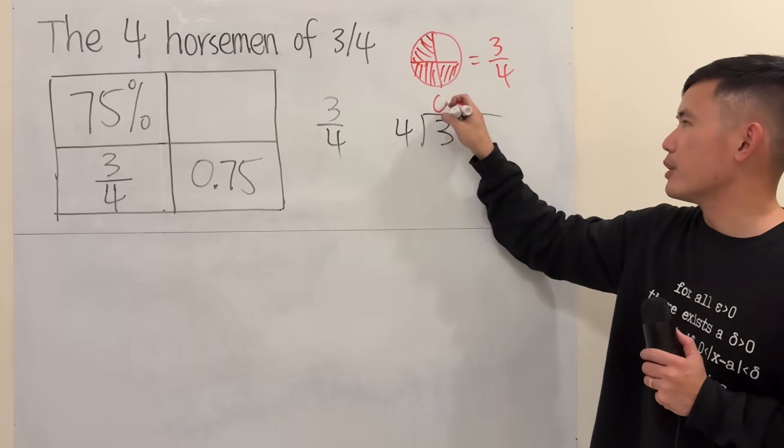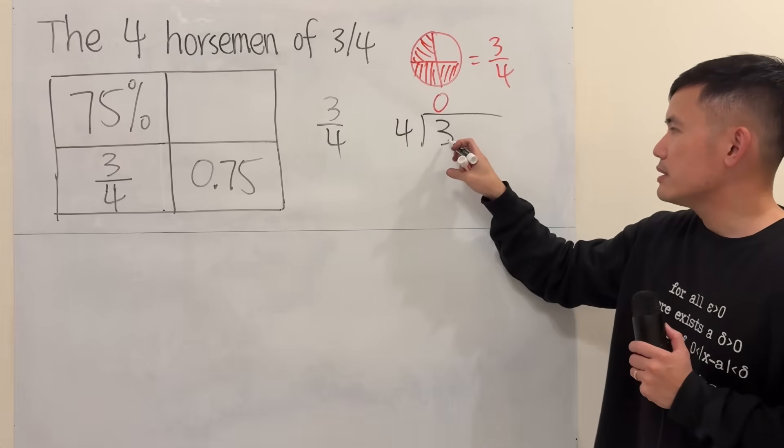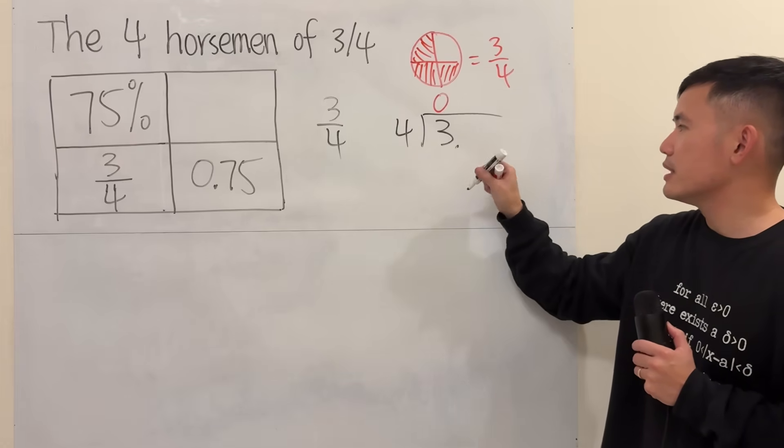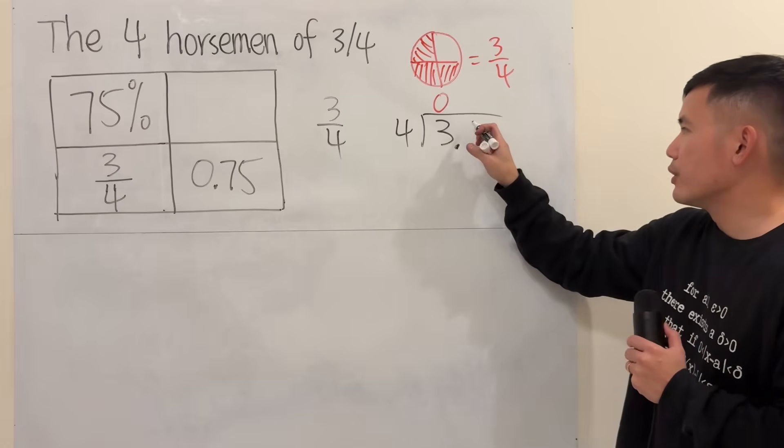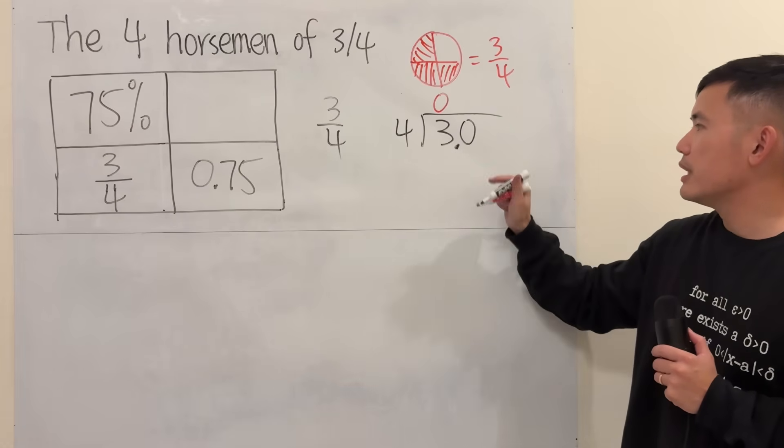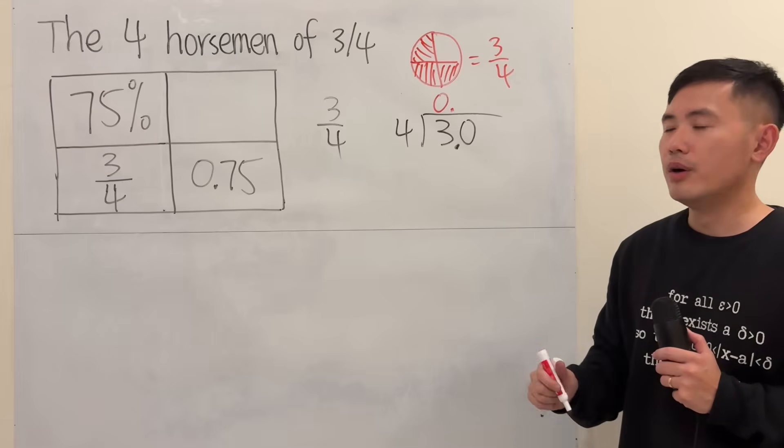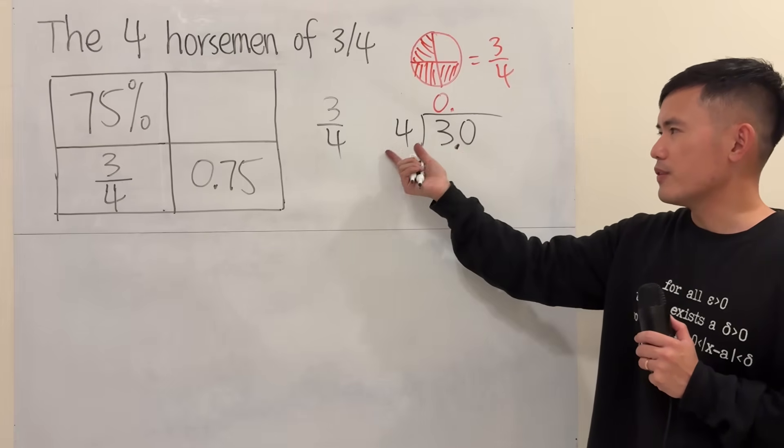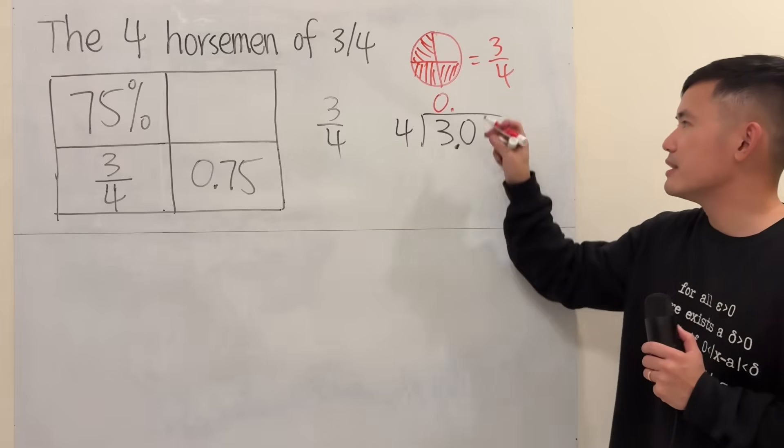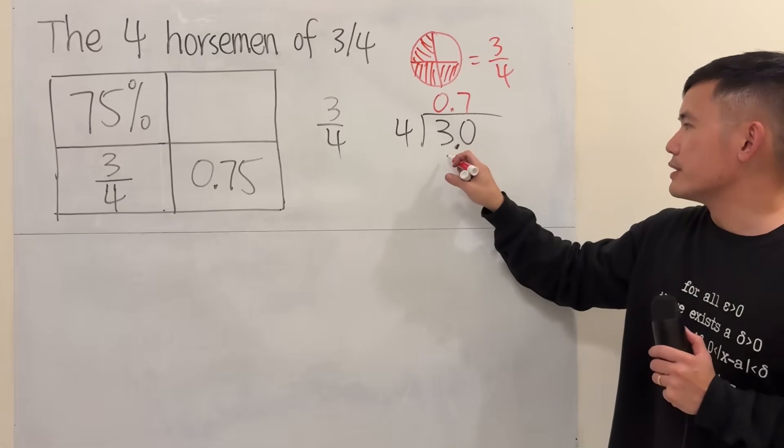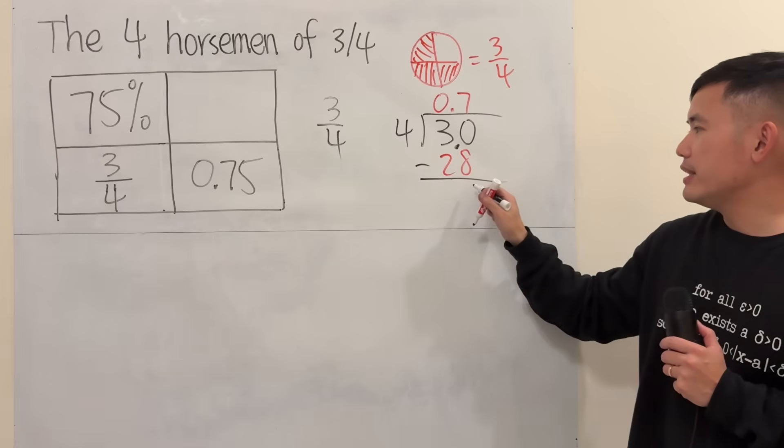But anyways, 4 and 3. Does 4 go into 3? No, 0 times, so you put a 0. And then you are going to line out with the decimal point. 3 is a whole number, so it's technically 3 points. And any time you put a 0 after a decimal point, you don't change value. So you can just attach a 0. And then you can go up. You have to go up and line out with the decimal point. Now, 4 and compare that with 30. 4 and 30. How many times does 4 go into 30? 7 times. 7 times 4 is 28. And then you subtract. 30 minus 28 is 2.